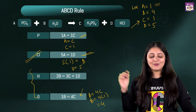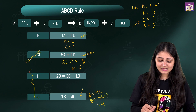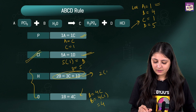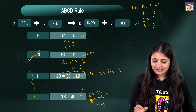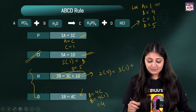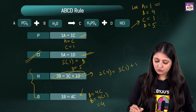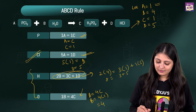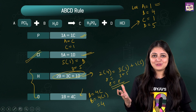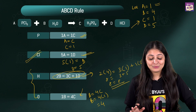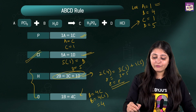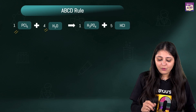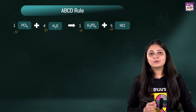We can cross-check using the hydrogen equation: 2B = 3C + 1D, which gives 2 × 4 = 3 × 1 + 1 × 5, so 8 = 3 + 5 = 8. Yes, that's correct! So all four values are: A = 1, B = 4, C = 1, D = 5. Just put these values into the equation — it's now balanced.